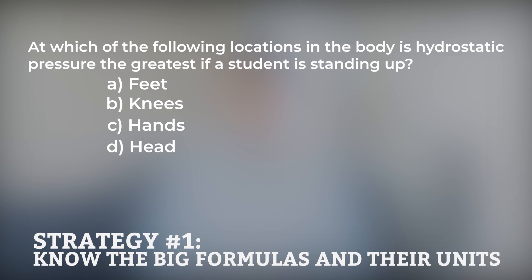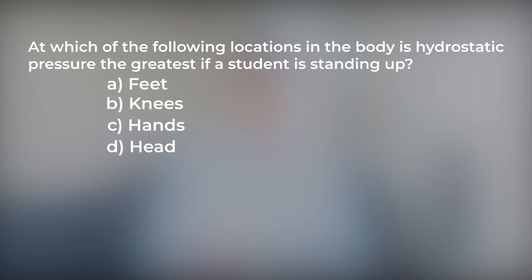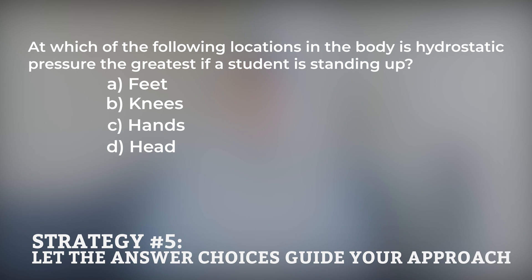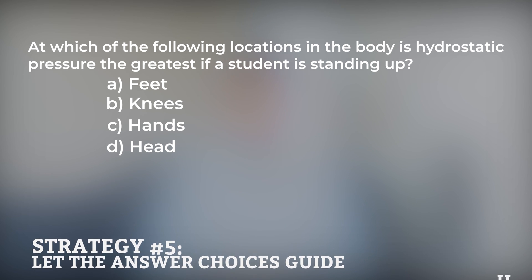Using MCAT physics strategy number one, we should recall the formula for hydrostatic pressure. Even though no numbers are used in this problem, we can use the formula to our advantage. MCAT physics strategy number five says that formulas show us relationships that help answer non-math questions.